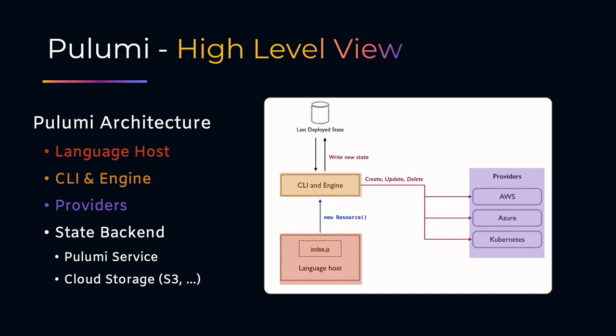The last component is the state backend. Pulumi saves state, and you have different options for state management. You can host it yourself — using an S3 bucket or a flat file system, for example — or you can use the Pulumi cloud service, which is free for open source users. The risk with self-managed state is that state files can be accidentally deleted or corrupted. I always encourage people to think carefully: do you really want to take ownership of the state file, or do you want to hand it off to someone else to manage?